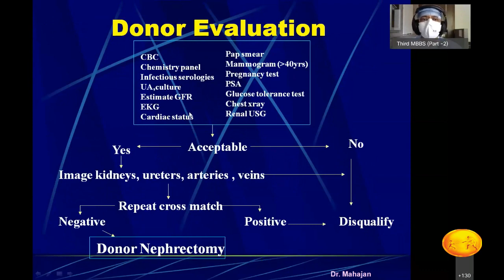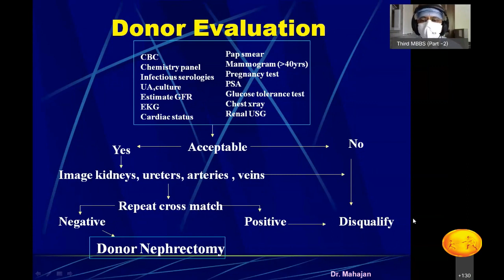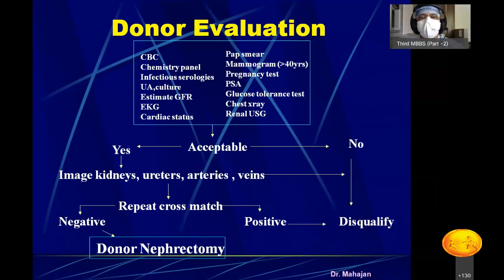Standard blood investigations are done — similar to those in recipient workup. If all are normal, imaging is performed: CT IVP, renal angiography to assess vessel status, and a DTPA scan to evaluate the functioning of both donor kidneys. If everything is normal, the donor is posted for nephrectomy; if anything is positive — positive cross-match or abnormal findings — the donor is disqualified. Both kidneys of the donor must be normal, because one is being removed and the donor must survive well with the remaining kidney.